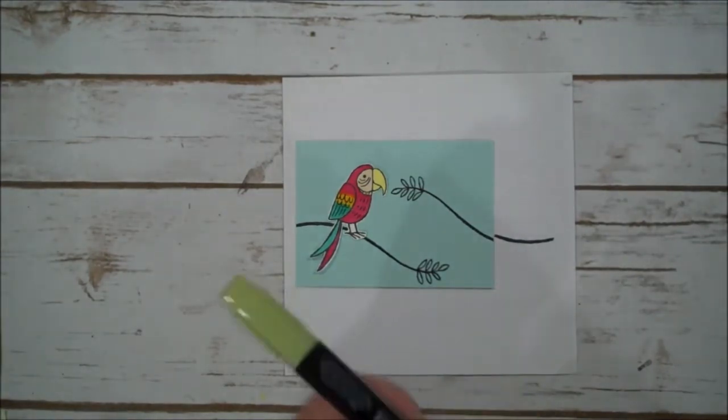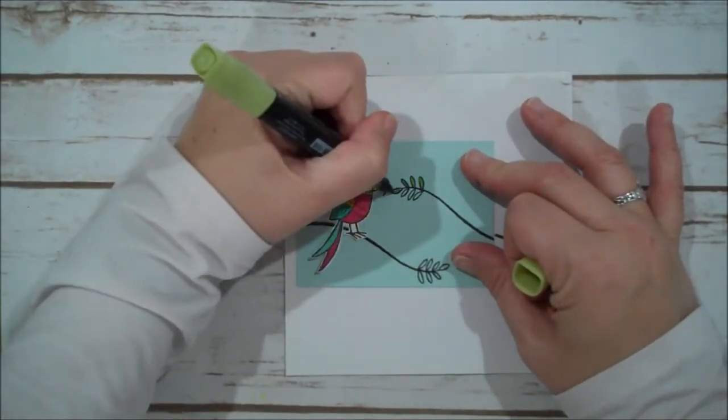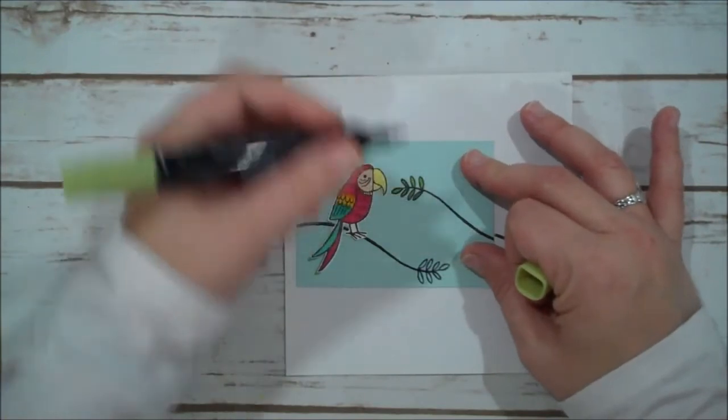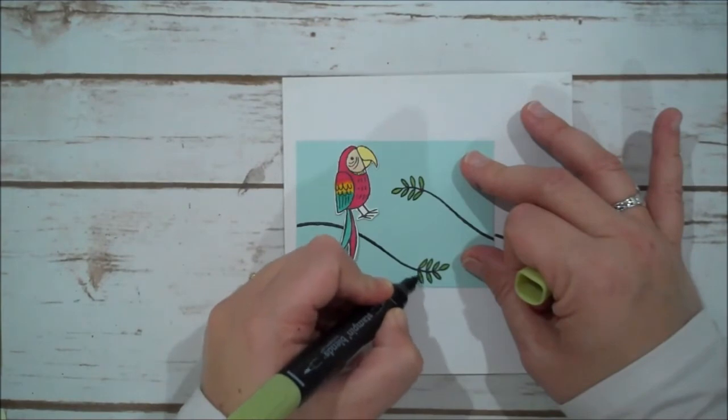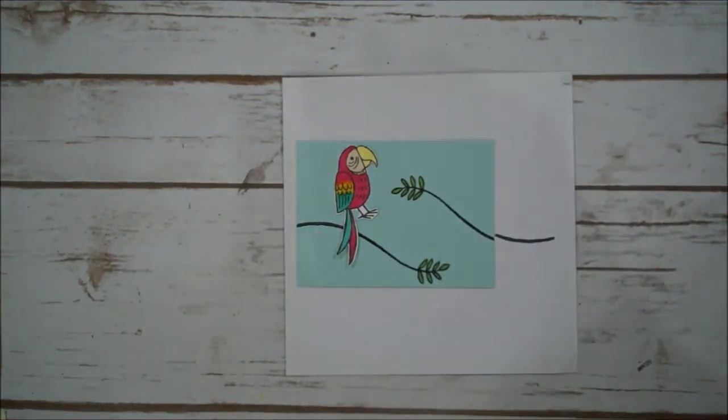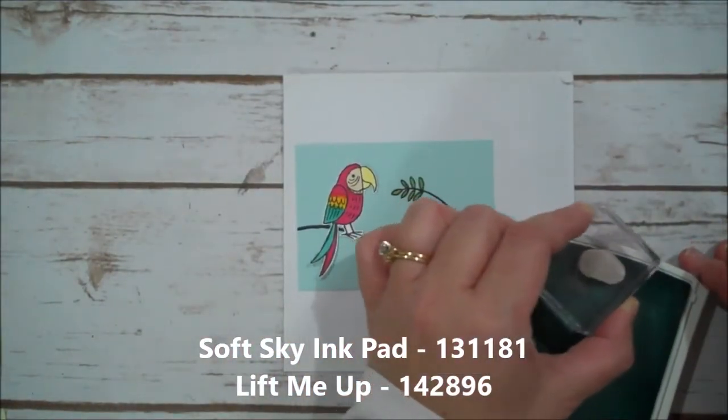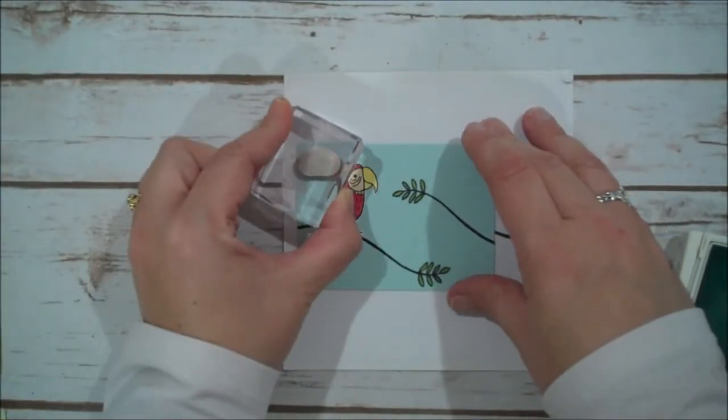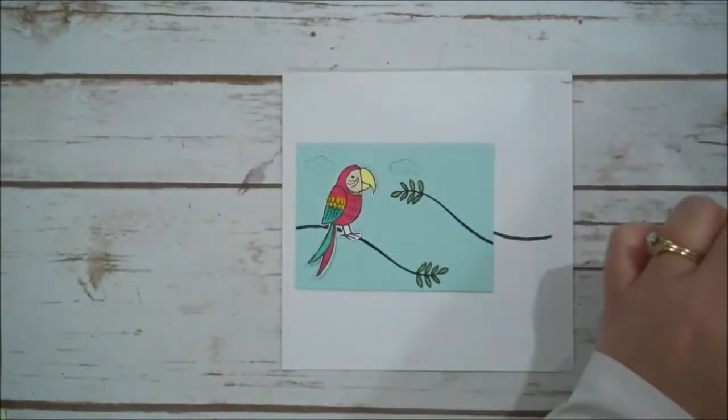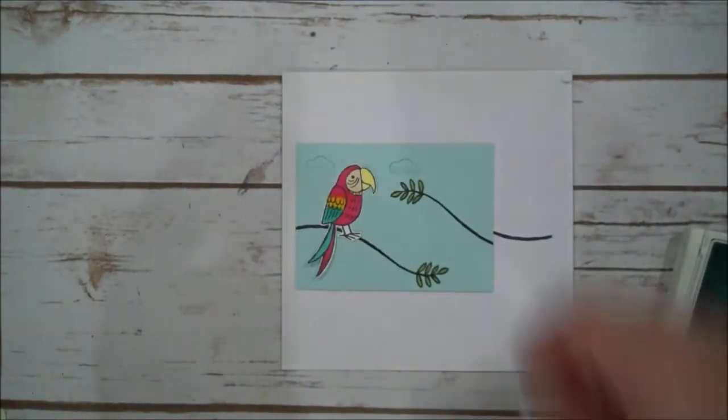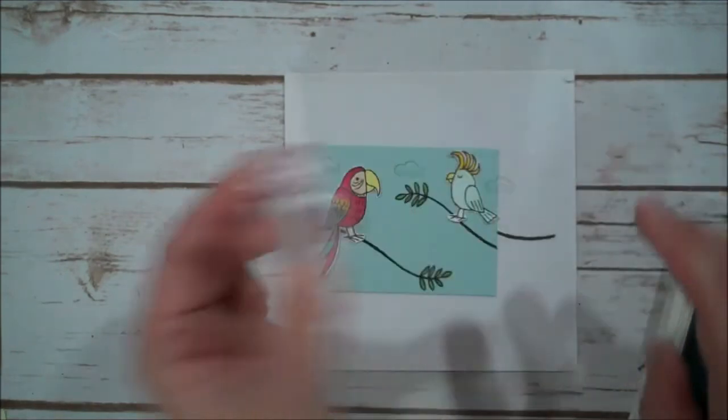Very good. And like I said we're going to use that Old Olive to color in our leaves here. And then I'm actually using the Soft Sky ink and I've taken the small cloud out of the Lift Me Up set. I'm just going to ink this up and we are going to put a few clouds here. I think my ink pad needs to be re-inked across the back of this. Let me get my other little birdie. Yeah maybe I'll do one off the edge here.